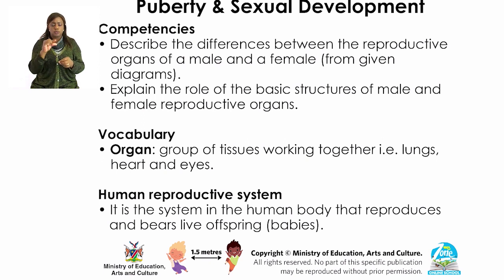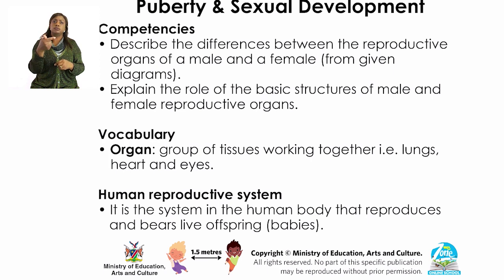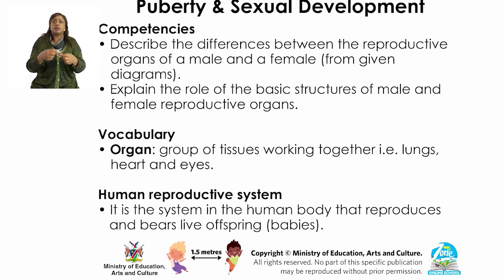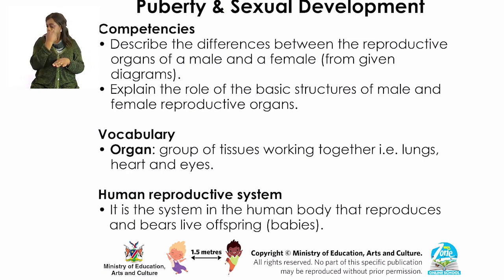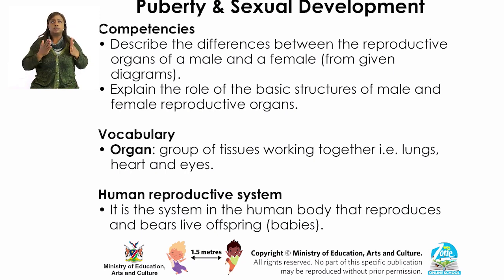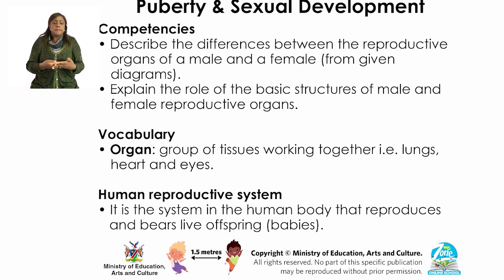Vocabulary — the words we will encounter during this lesson. One of the most important words to know is organ, which refers to a group of tissues working together. This group of tissues can be self-contained; they can be inside the body of the organism or outside the body of an organism. Examples include the lungs, your heart, and your eyes. The next word is the human reproductive system — the system in the human body that reproduces and bears live offspring; in other words, it is responsible for making babies.